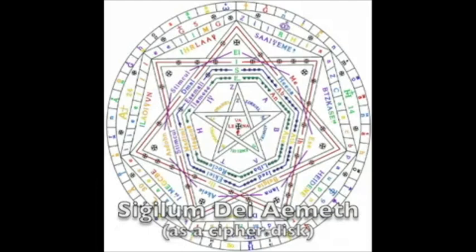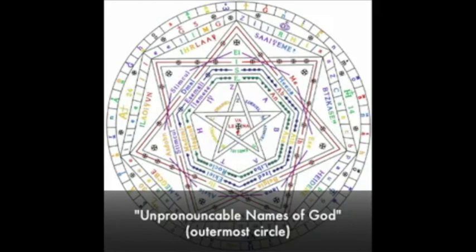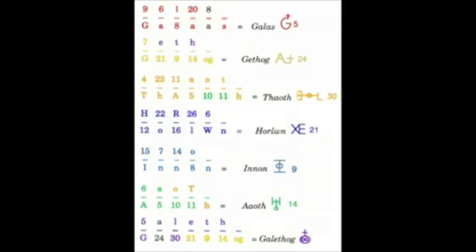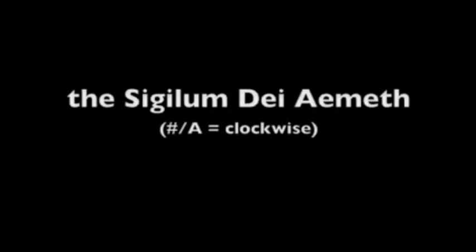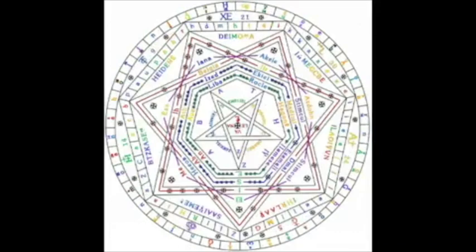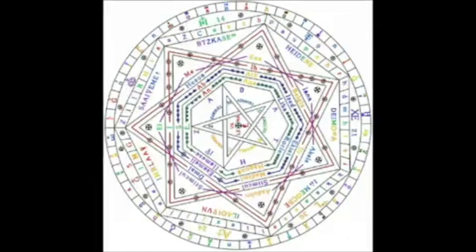The unpronounceable names of God are derived from rotating the outermost circle of the Sigillum Dei Aemeth either clockwise or counterclockwise, according to whether the number appears above the letter or whether the letter appears above the number. Thus, the result would be either a clockwise rotation around the Sigillum Dei Aemeth from one letter to the next according to the number given with that letter, or otherwise an opposite counterclockwise rotation if the letter appeared above the number.